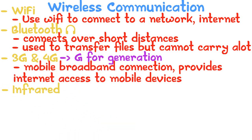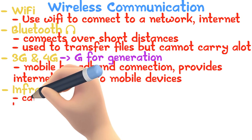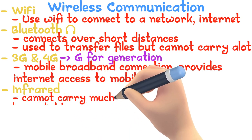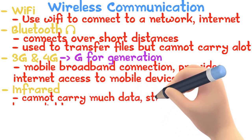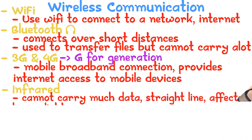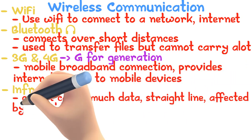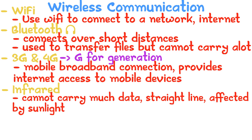Infrared communication has a lot of disadvantages. IR signals cannot carry much data, and they need a clear line of sight since the signal travels in a straight line and is affected by sunlight. Therefore, infrared signals are not used for anything big — they are mostly used for remote control devices.